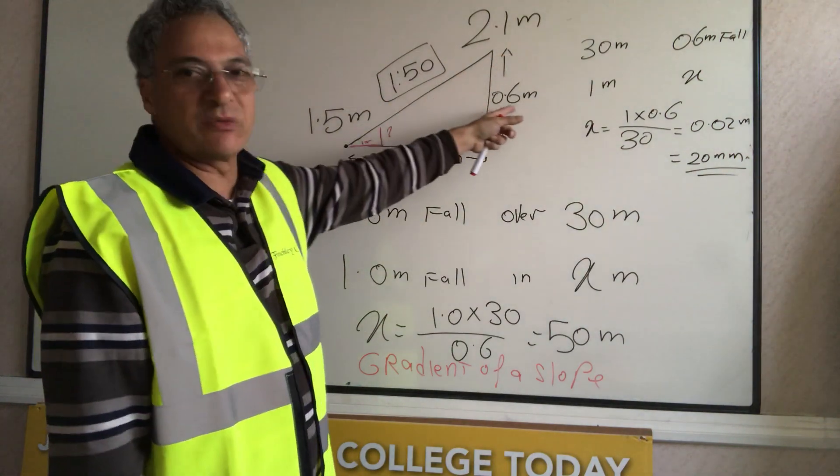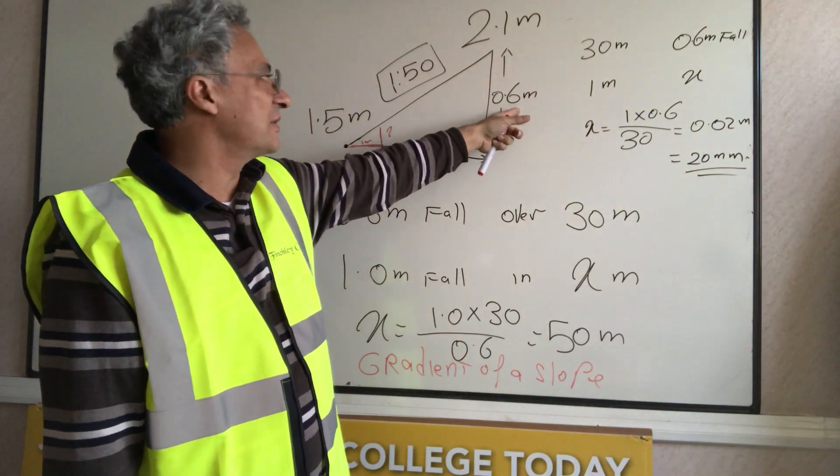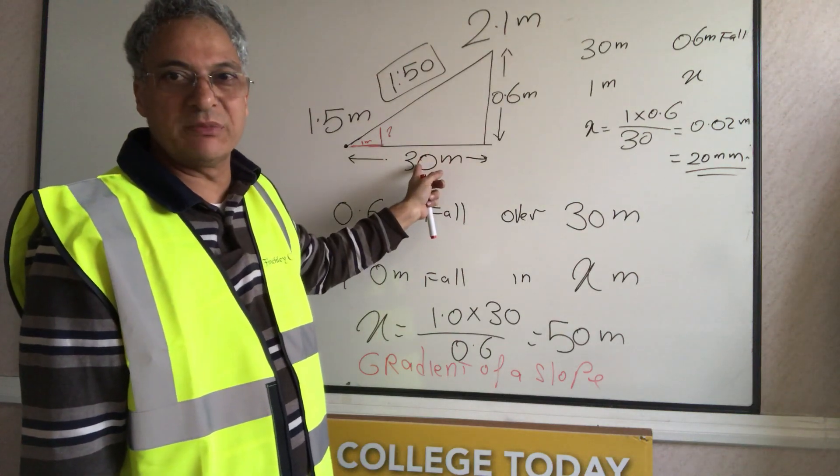If we subtract the two from each other, we get a fall of 0.6 meters over a length of 30 meters.